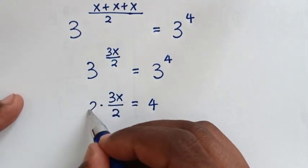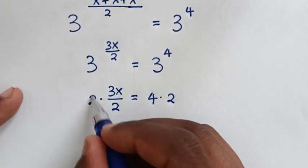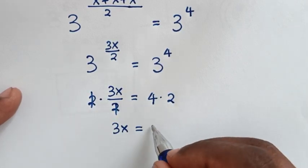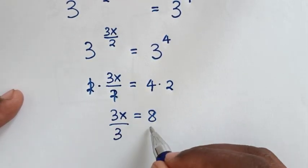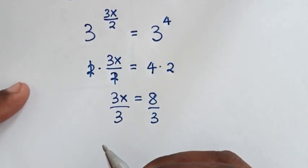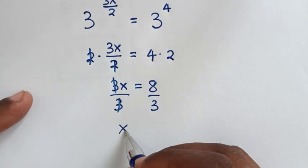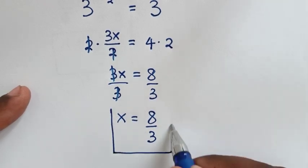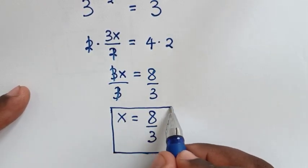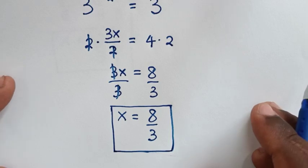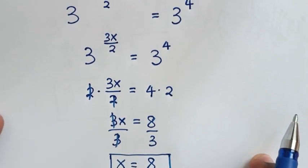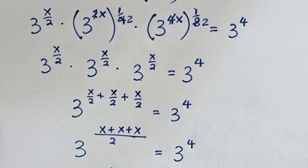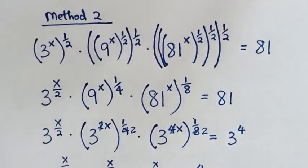We multiply by 2 on both sides, so this cancels, giving 3x equals 8. Then we divide by 3 on both sides, so x equals 8 over 3. This is the answer to our problem — the same as the answer from Method 1. Thank you for watching. Don't forget to subscribe to my channel, and see you in the next video. Bye bye.